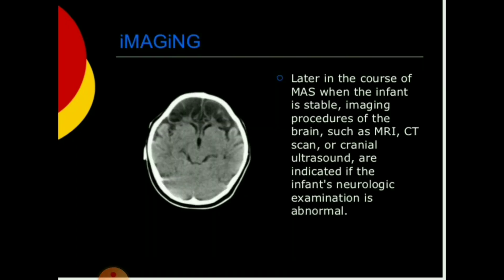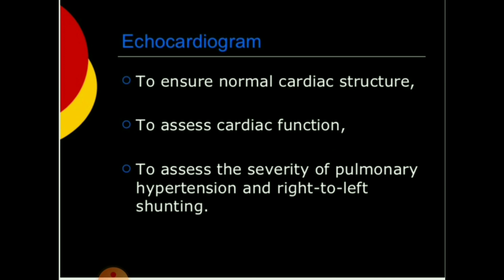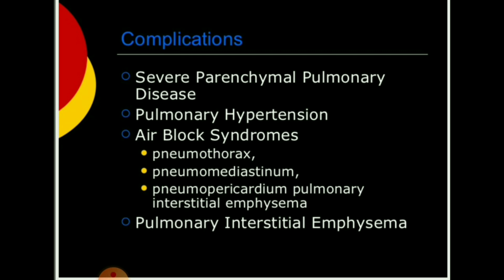Imaging shows diffuse chemical pneumonitis from constituents of meconium and atelectasis on chest X-ray. CT or MRI later in the course when the infant is stable, and cranial ultrasound or brain MRI/CT if neurological examination is abnormal. Echocardiogram should be done to assess normal cardiac structures, cardiac function, severity of pulmonary hypertension, and right-to-left shunting.